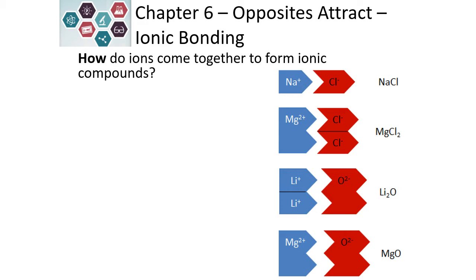If we look at magnesium, which is a plus two, and chloride, which is a minus one, it's going to take two chlorides to make the charge balance with the magnesium — so one magnesium for two chloride. If we look at lithium, lithium is a plus one. If we combine it with oxygen, which is a minus two, it's going to take two lithiums to balance the charge of the oxygen.